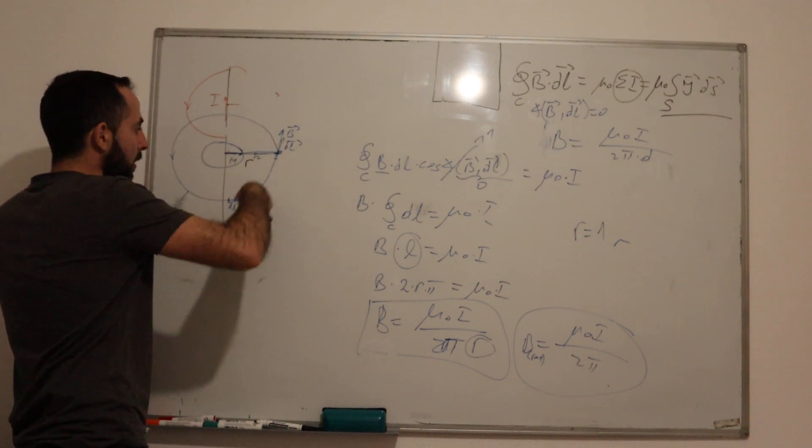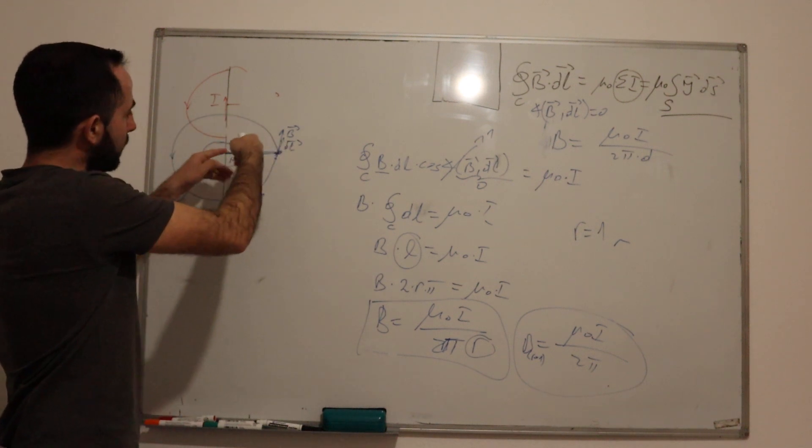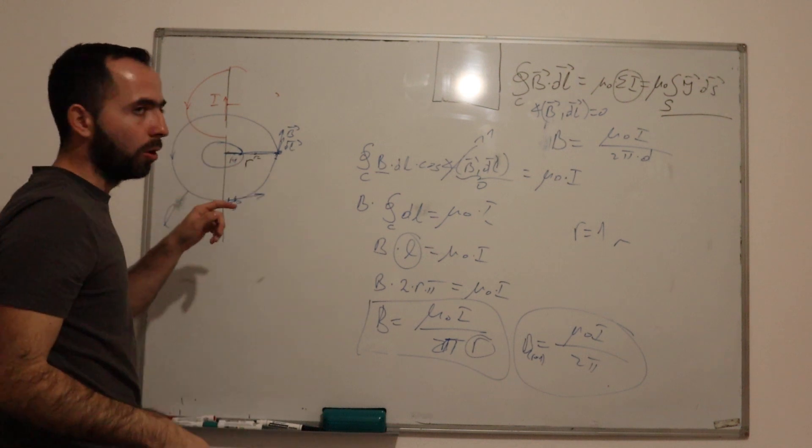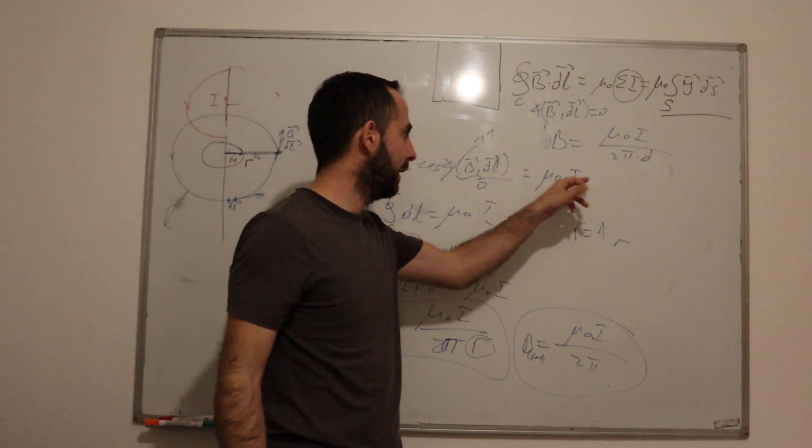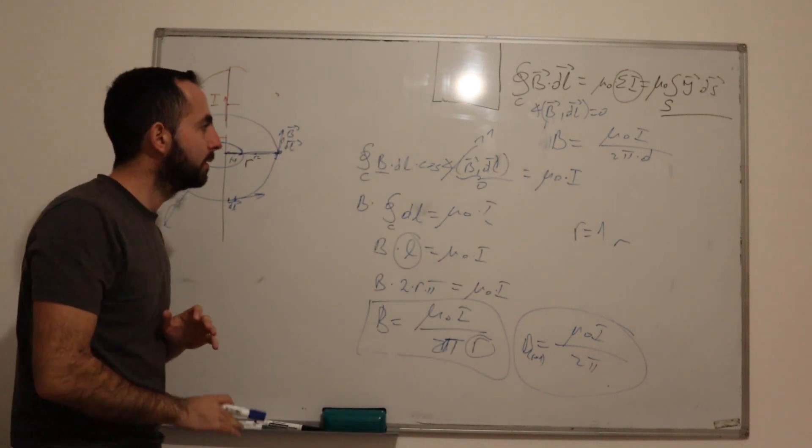What are all currents inside of our closed contour, this circle? We only have one current, so it is I. And that's it.